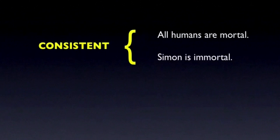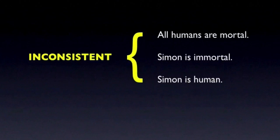Now, if you added the assumption about Simon being human as a claim to this set, like so, then you'd have an inconsistent set. Here you have three claims where, if any two of them are true, the third has to be false.